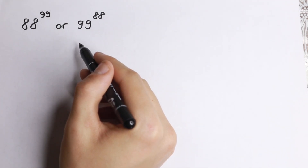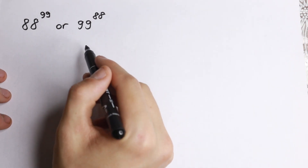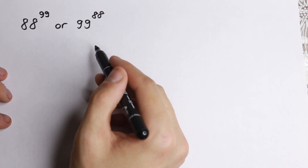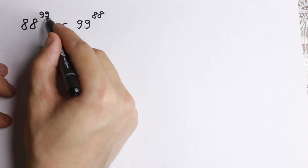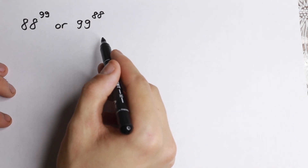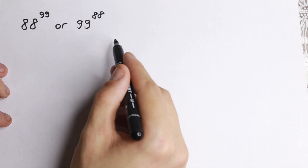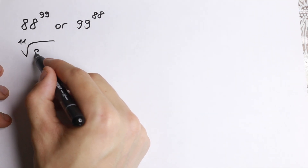On the first side we cannot just compute this, because these are giant powers — 99 and 88. We can't solve it even with our phone, because it's hard to say what is bigger. But I want to show you a really good math trick right here. First of all, both 99 and 88 can be divided by 11.